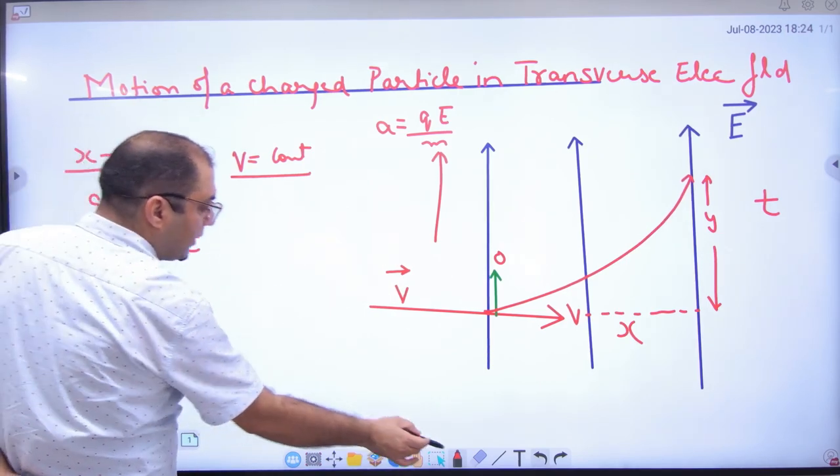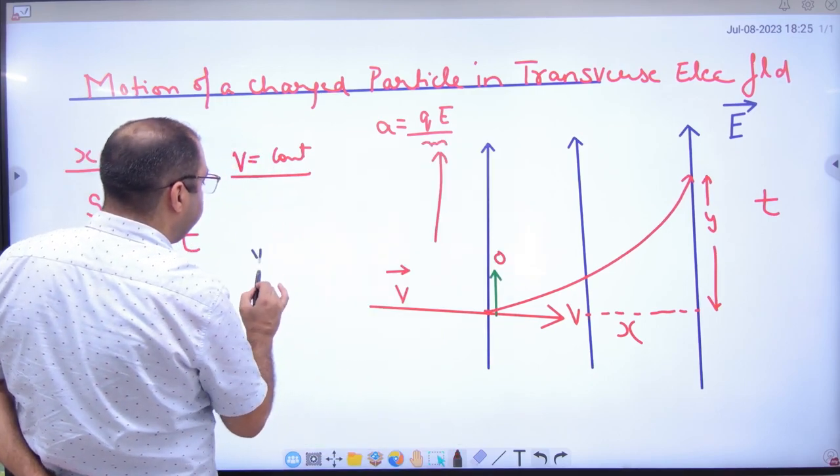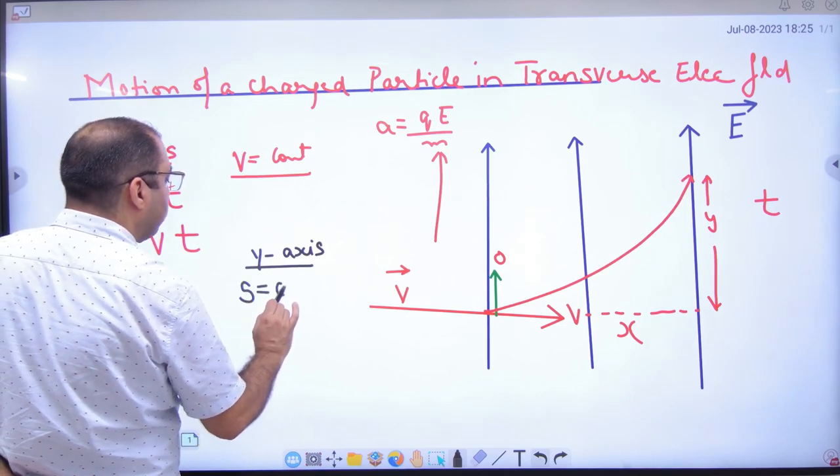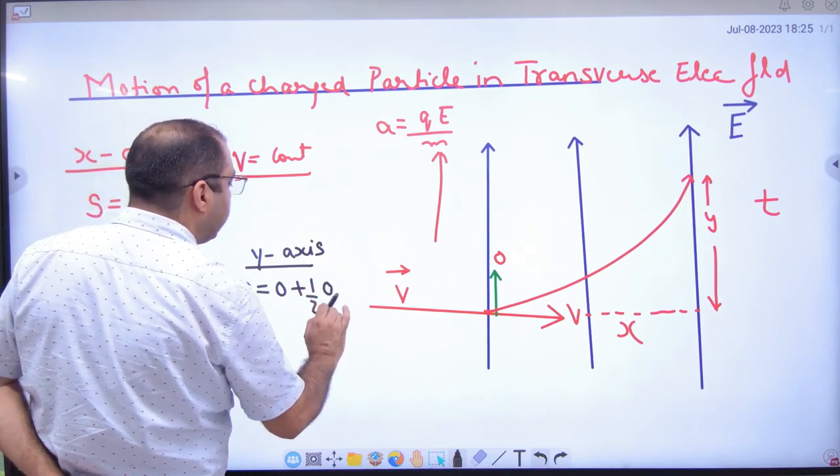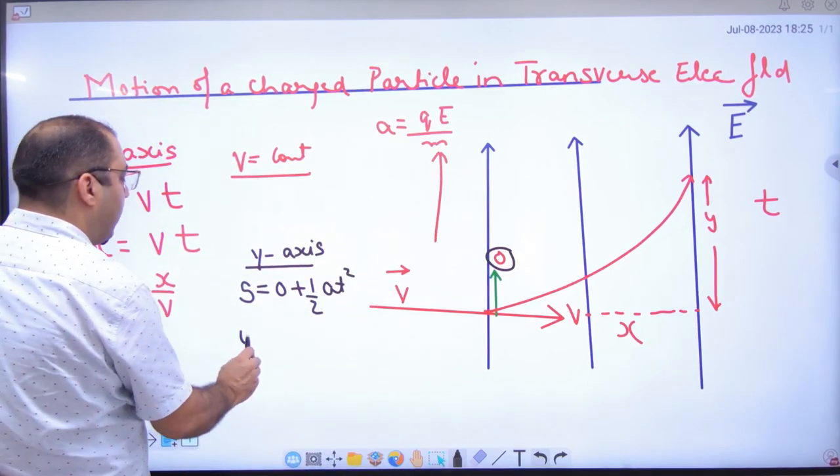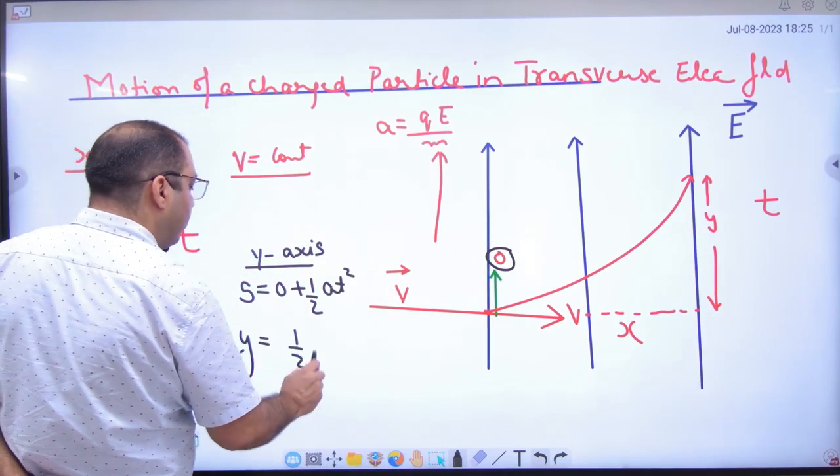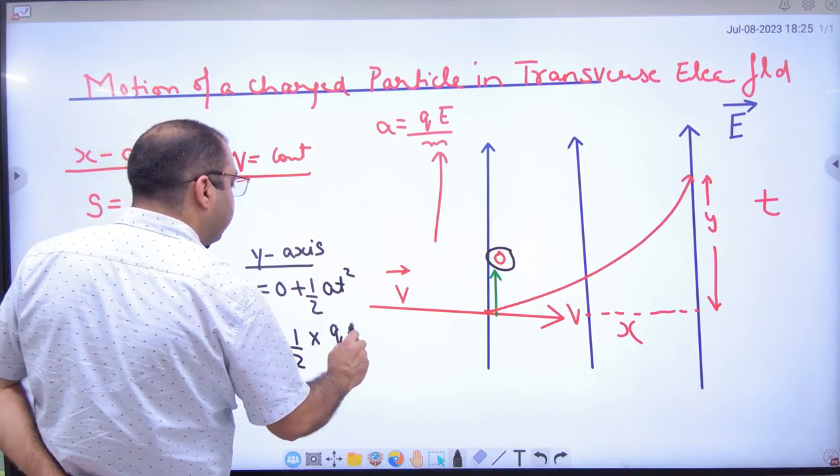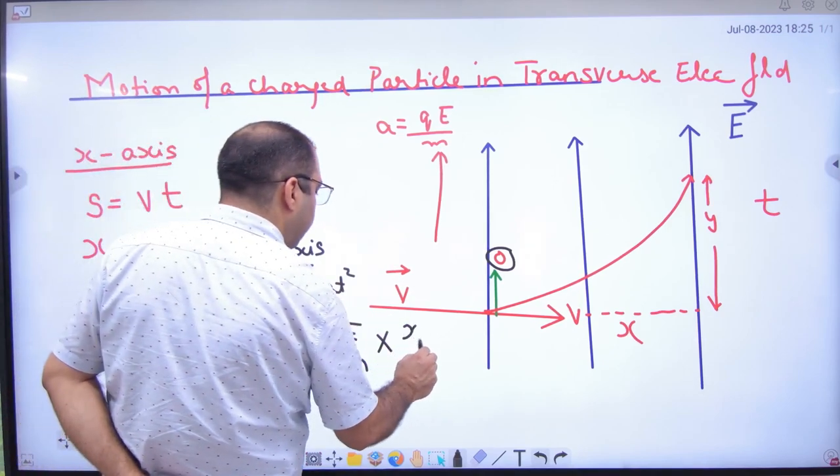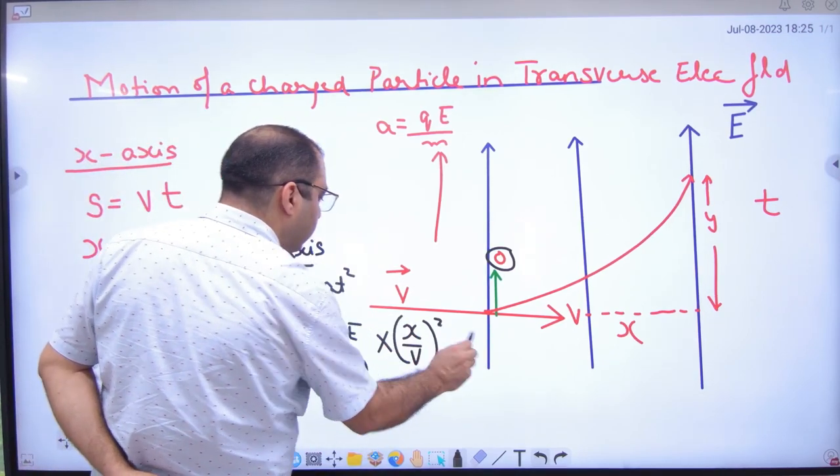And if we talk about y-axis, you apply s equals zero plus half a t squared. Why is it zero? Because the initial vertical velocity in y is zero. So y equals half times acceleration times t squared. Acceleration on y-axis is qE by m. And we can put time as x upon v, whole squared.